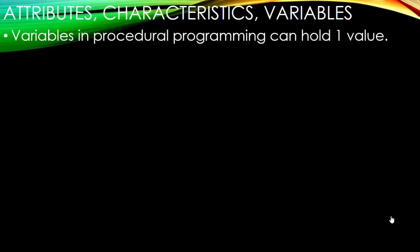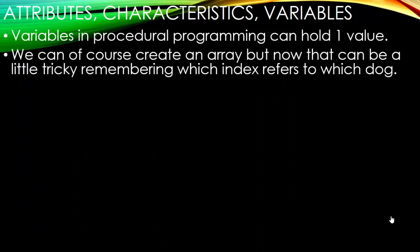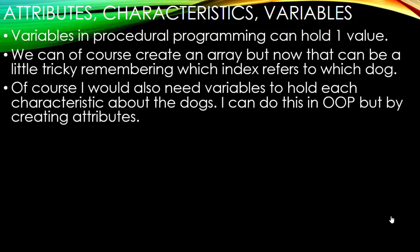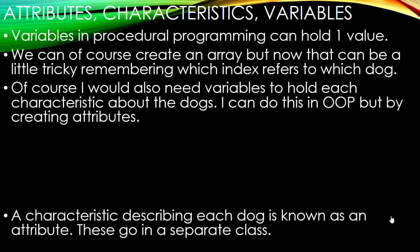So variables in procedural programming can hold one value. We can, of course, create an array, but now that can be a little tricky, trying to remember which index refers to which dog. Now, of course, I would also need variables to hold each characteristic about the dogs. I can do this in object-oriented programming, but by creating attributes.